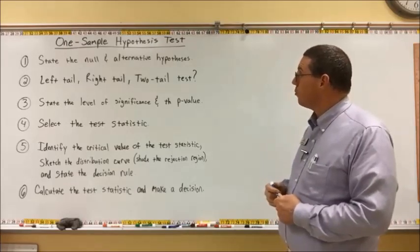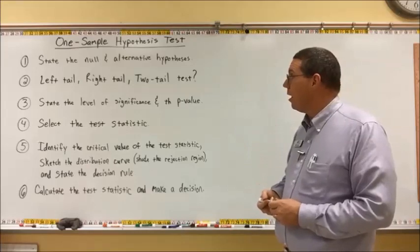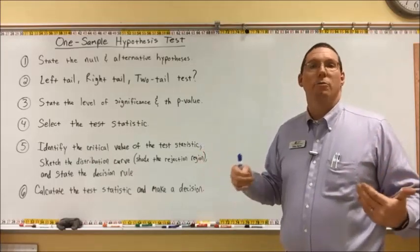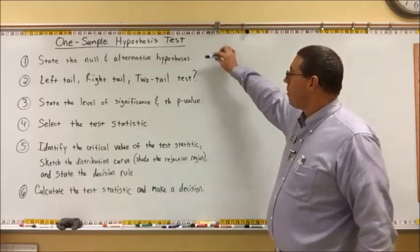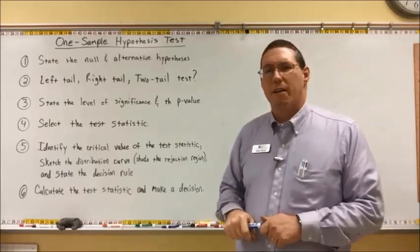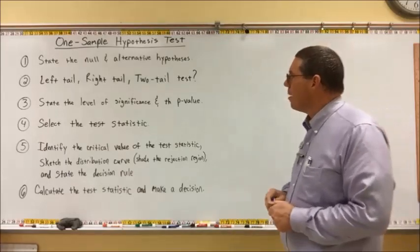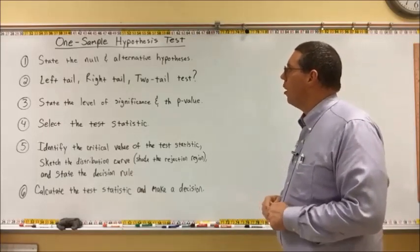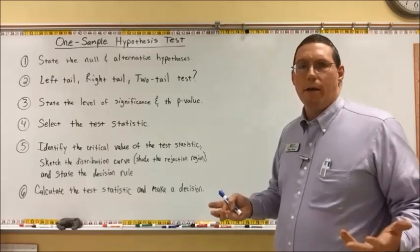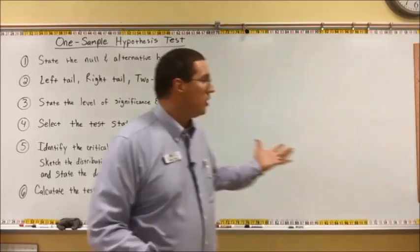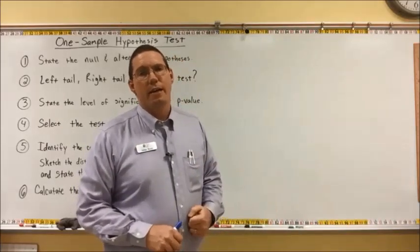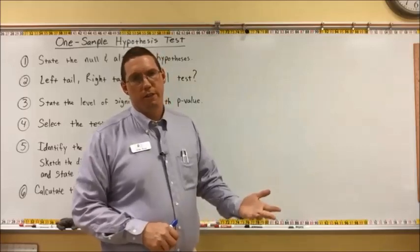I'm going to go through each one of these steps one by one and explain the idea behind the step and then how to do the step. The very first step is probably the hardest one — hardest meaning it's going to take the most time to explain. Step one says: state the null and alternative hypotheses. I'm going to put up definitions of null hypothesis and alternative hypothesis.